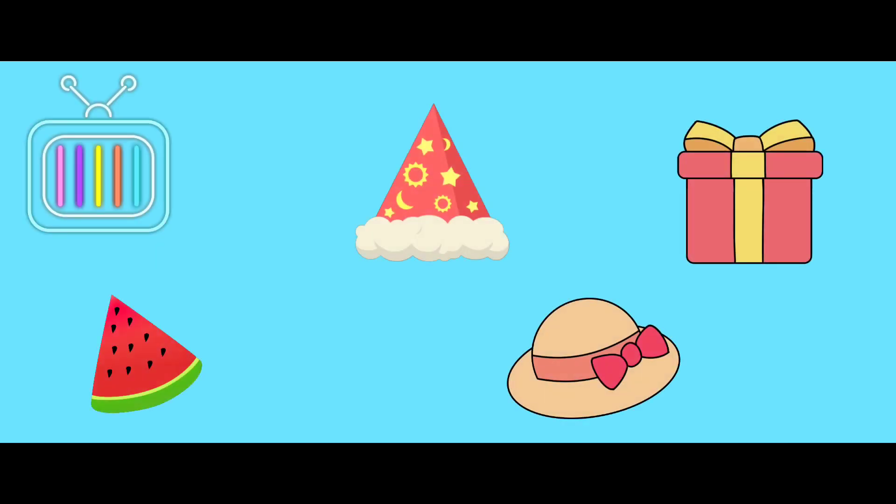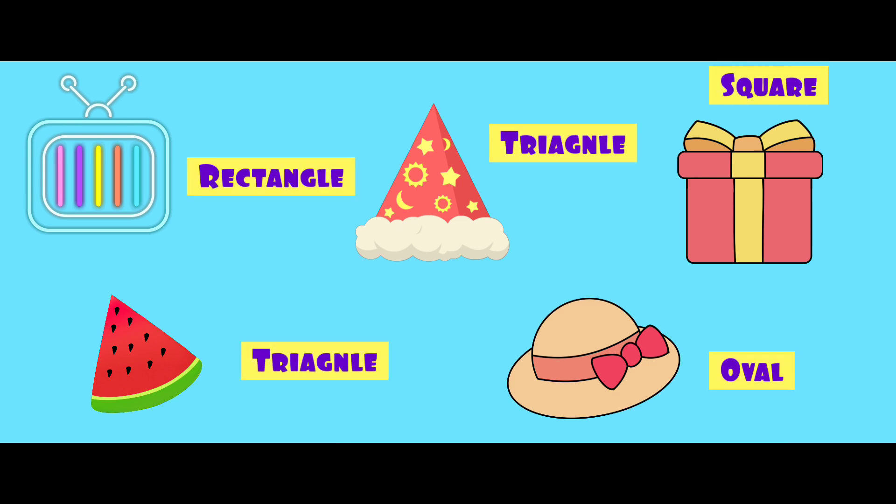Now let's review. Here you can see pictures. Now let's find the correct shape. For example, a party hat is a triangle. Now stop the video, write down and then check the answers.